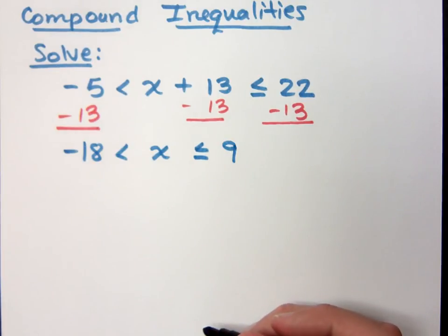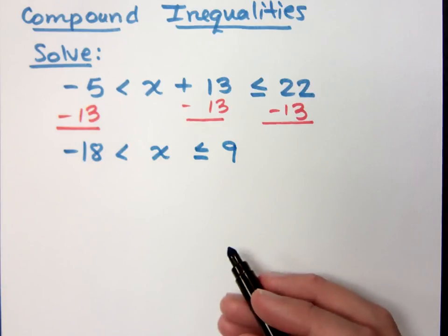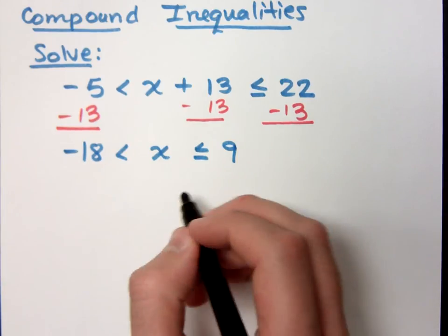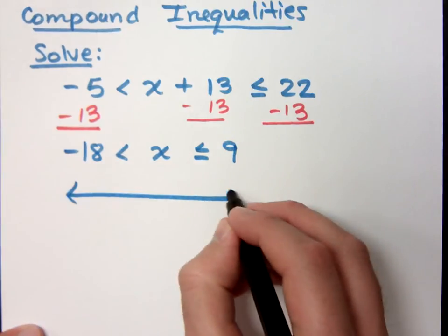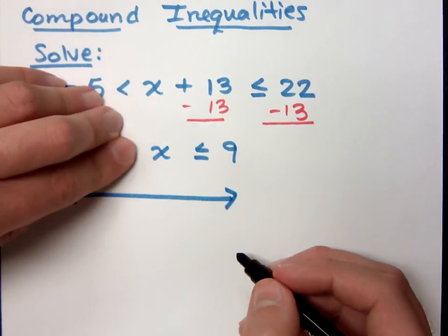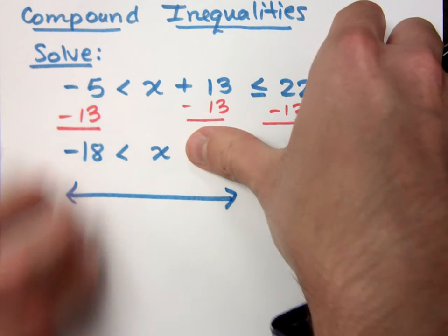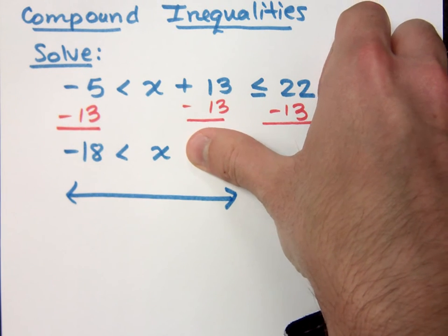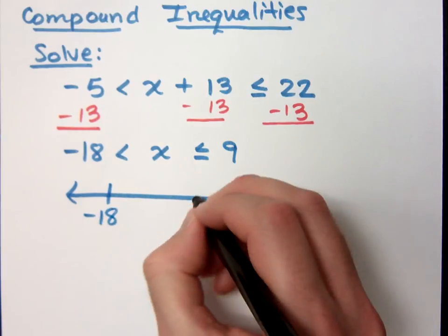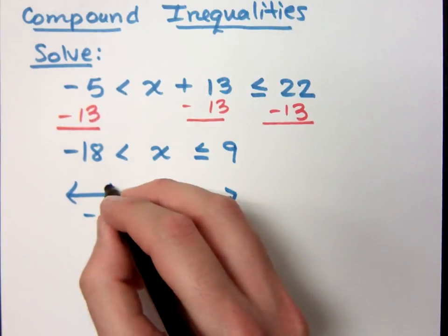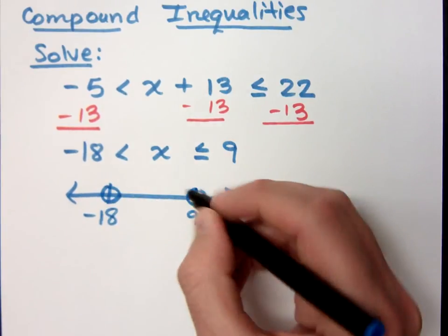So notice that I have x completely by itself here in the middle. And here's what that means. It means that x is less than or equal to 9, but at the same time x is greater than negative 18. So your solutions are those numbers that are between negative 18 and 9.